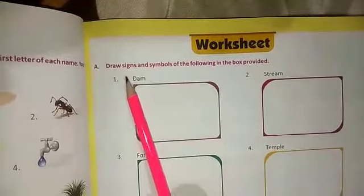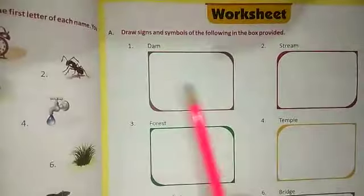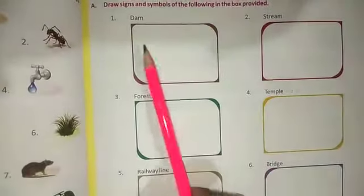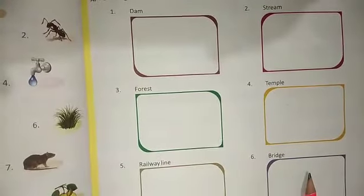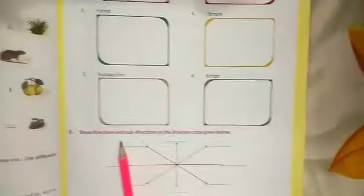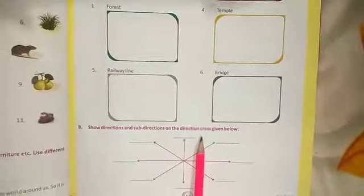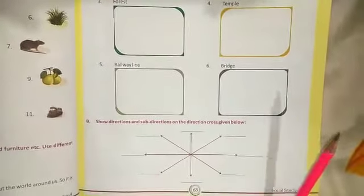Now then after worksheet, draw signs and symbols of the following in the box provided. Very easy it is. Dam, stream, forest, temple, railway line and bridge. Draw signs and symbols here. And the last, B, show direction and sub direction in the direction cross given below. It is the end of the chapter. Thank you.